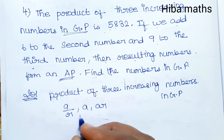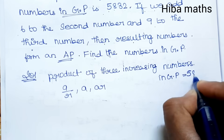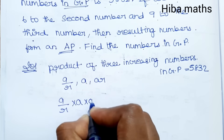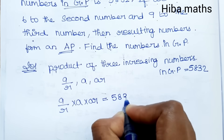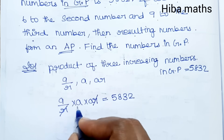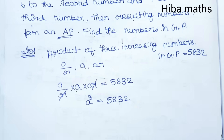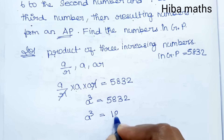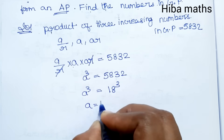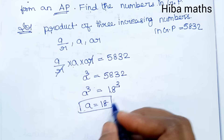We have a/r, a, and ar as the three GP terms. Now we multiply them. The r in the denominator and numerator cancel out, giving us a cubed. 5832 equals a cubed, so a equals 18. Now we have the value of a. We add the second condition.